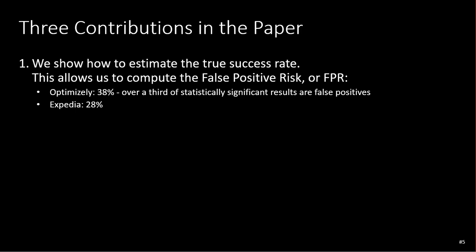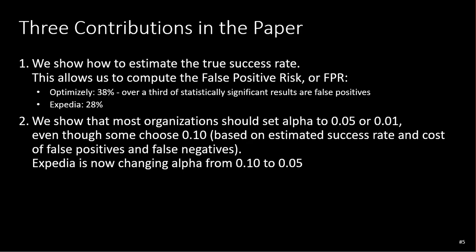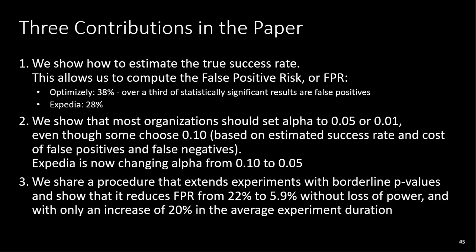Expedia has a 28% false positive risk. We show that most organizations should set alpha at 0.05 or lower, even though many choose 0.10 — Expedia is now in the process of lowering it to 0.05. We also share a procedure that extends experiments and reduces the false positive rate from 22% to 6% without loss of power and with only a 20% increase in average experiment duration.